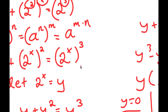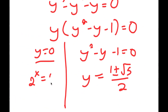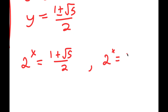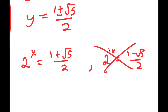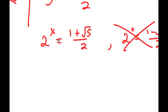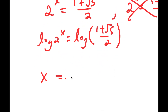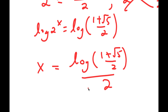Remember we let 2 to the power of x equal y. So first, 2 to the power of x equals 0 — you can't take the power of a number and make it equal to 0, so there's no solution. For 2 to the power of x equals 1 minus the square root of 5 over 2: since 1 minus the square root of 5 is negative, and a positive base can't equal a negative number, there's no solution there either. The only valid solution is 2 to the power of x equals 1 plus the square root of 5 over 2. Taking the log of both sides, x equals log of the quantity 1 plus the square root of 5 over 2, divided by log 2.